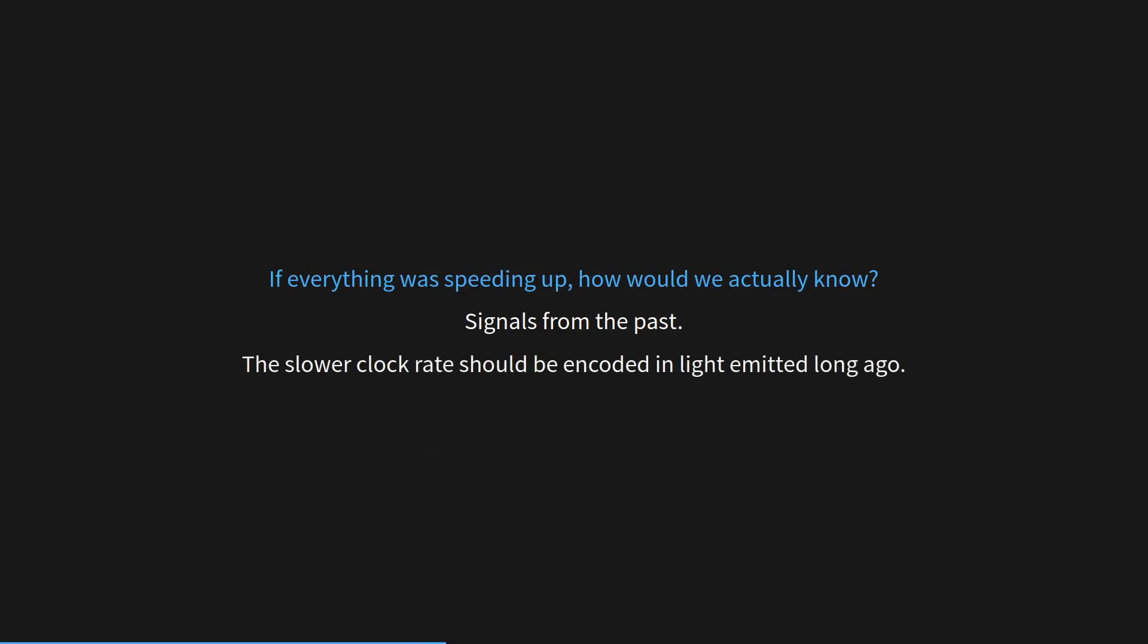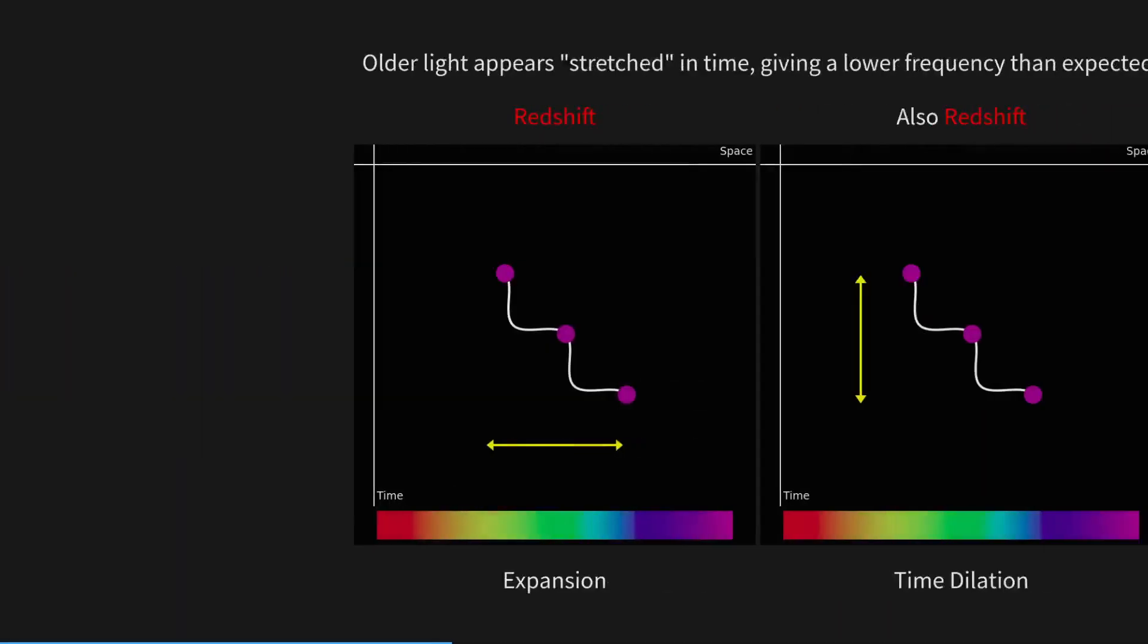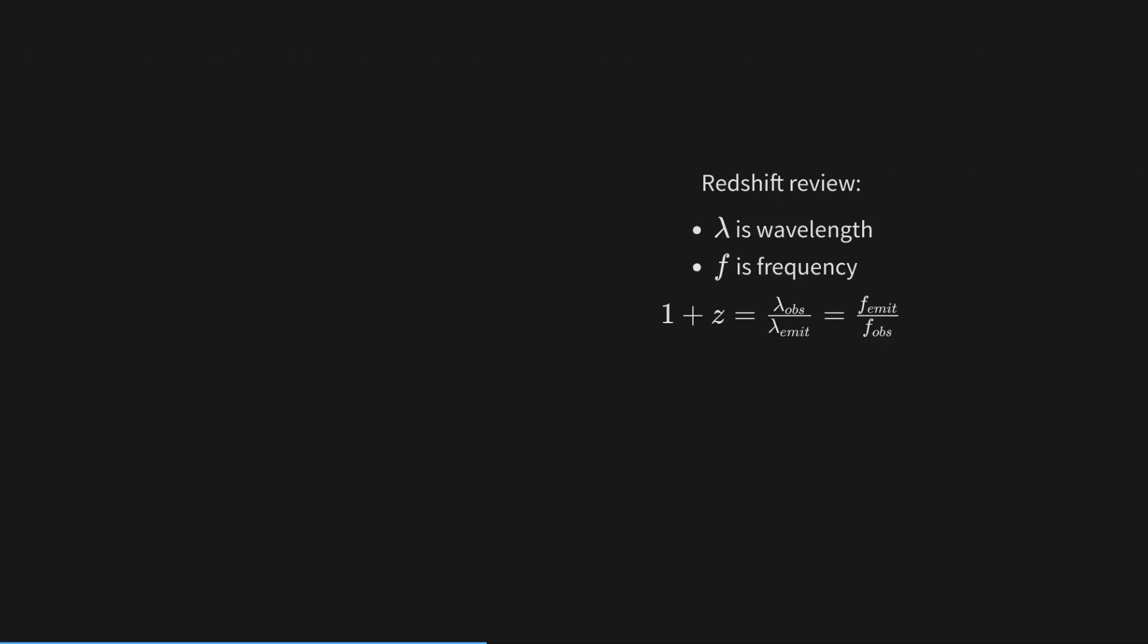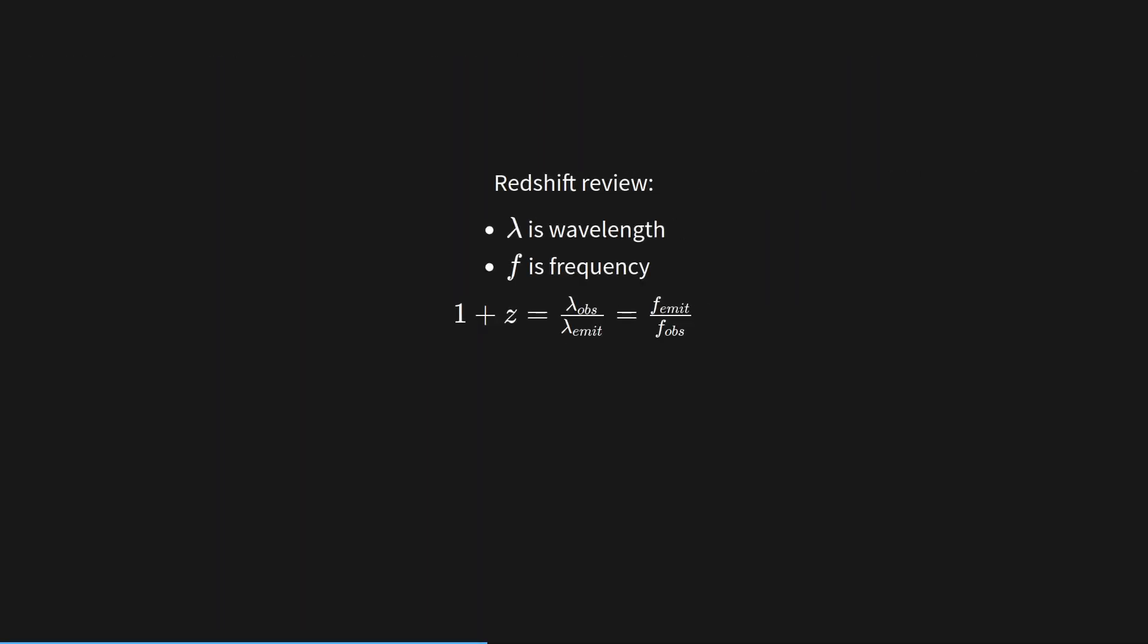Well, signals from the past would tell us. The slower clock rate should be included in light emitted long ago. We know that light gets redshifted when it's stretched in space, but it also gets redshifted if it were stretched in time. Remember that a redshift is a change in wavelength and or a change in frequency.